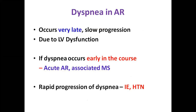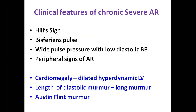Dyspnea is a late manifestation in AR. Even with an ejection fraction of 35 to 40 percent they may be asymptomatic, and dyspnea progresses slowly. If it occurs early, think of acute AR or associated conditions. Chronic severe AR is diagnosed mostly by the peripheral signs. The length of the diastolic murmur and the Austin Flint murmur are useful to assess severity. All peripheral signs may be absent in patients with LV dysfunction, acute AR, or associated other valvular lesions.